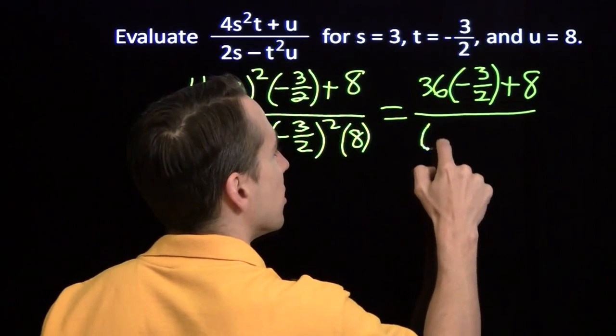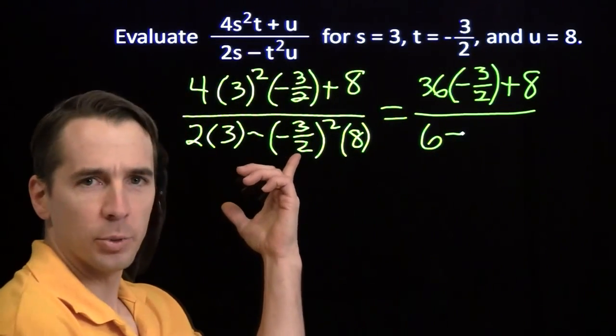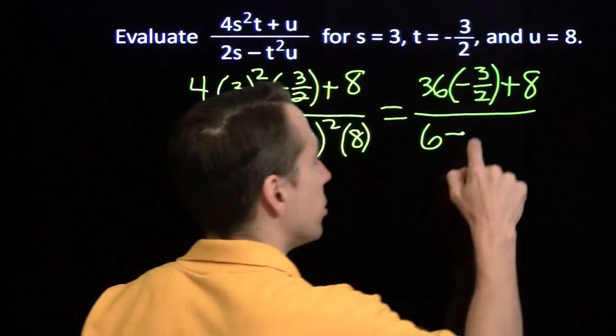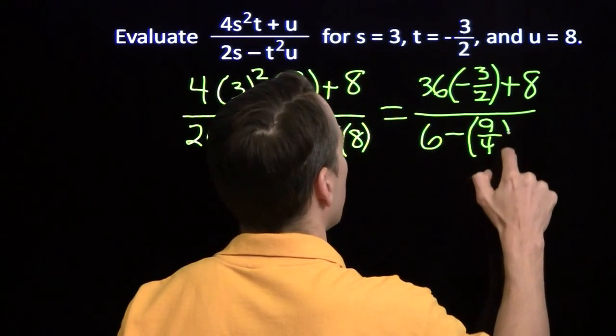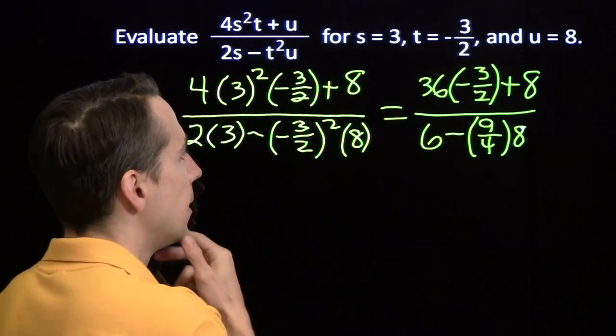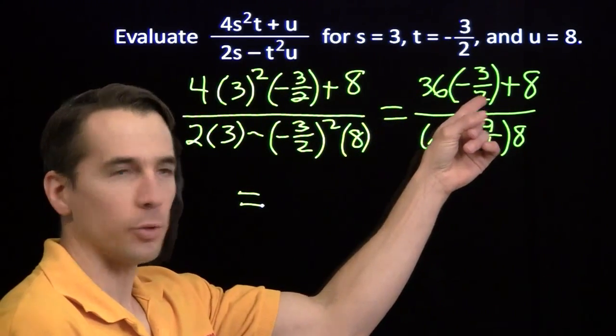2 times 3 is 6. And then over here, we're going to square the negative 3 halves, we'll get 9 fourths. We have 9 fourths times 8. All right, good enough.